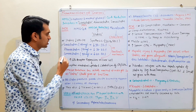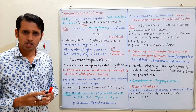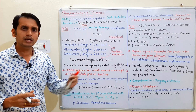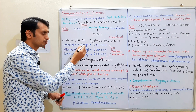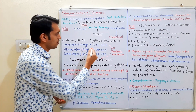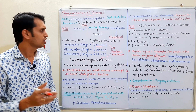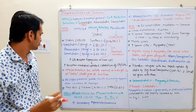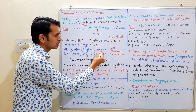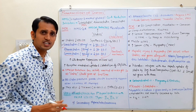Lovastatin is the prototype drug of statins, introduced in the late 1980s. Lovastatin at the 40 mg dose decreases cholesterol synthesis up to 30-35%. At the 10 mg dose, it decreases cholesterol by 30-35%, and at the 80 mg dose, it decreases cholesterol synthesis by 40-50%.